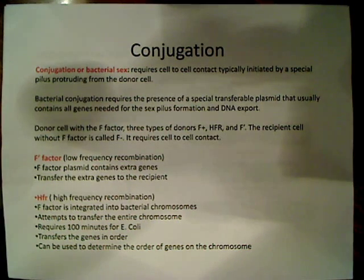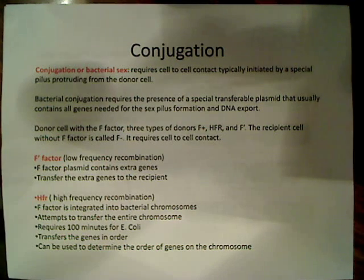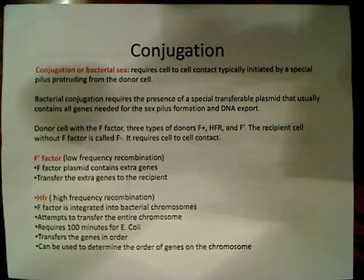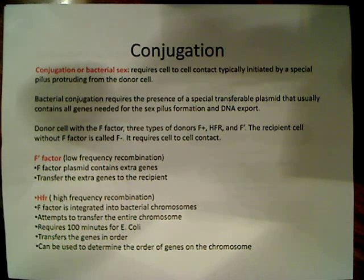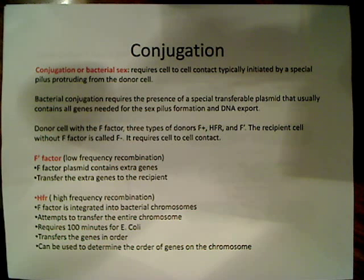Picking up where I left off with gene transfer, I want to start talking about conjugation, or bacterial sex. Conjugation requires direct cell-to-cell contact. This direct cell-to-cell contact comes in the form of a pilus, and it's typically initiated by this pilus.